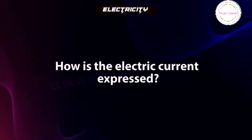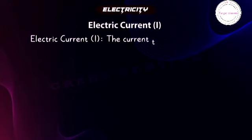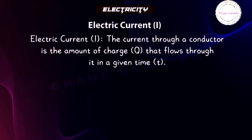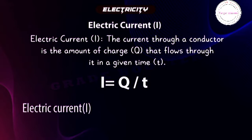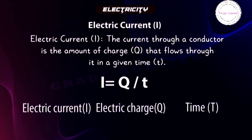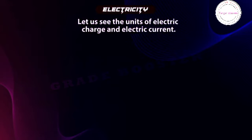Now let's see how electric current is expressed. Electric current I: the current through a conductor is the amount of charge Q that flows through it in a given time t. It is given by the formula I = Q/t, where I means electric current, Q means electric charge, and t is time.